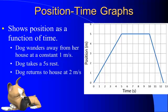Let's take a look at position-time graphs. Assume we have a dog that starts on our back porch — we'll call that position zero. Over time, the dog wanders away from the house at a constant one meter per second for five seconds. So after one second the dog will have gone one meter, after two seconds two meters, and so forth. We get a position-time graph that looks like this for the first five seconds.